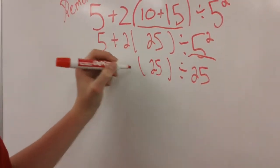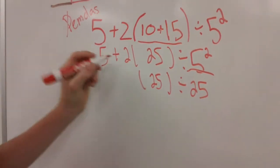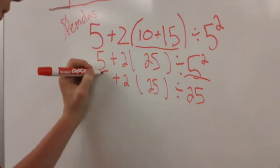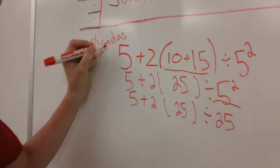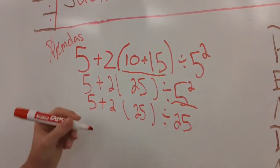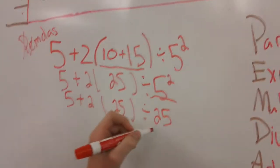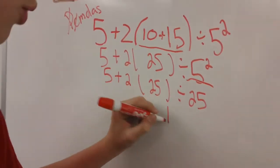If you need to learn about powers, you can look to our other video. Now that you've done exponents, you must go to multiply or divide, whichever order it is in. 25 divided by 25, so that would be 1.